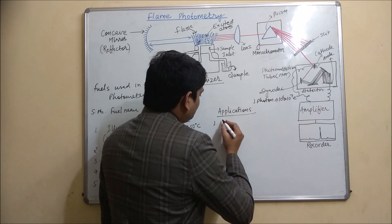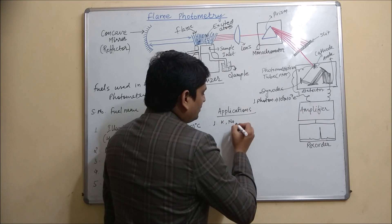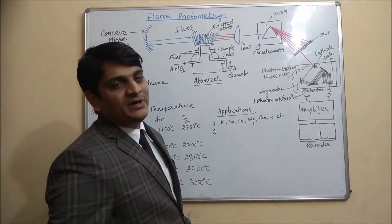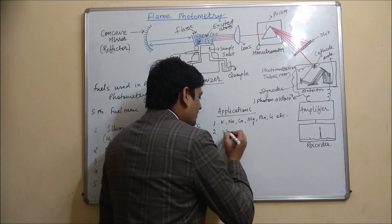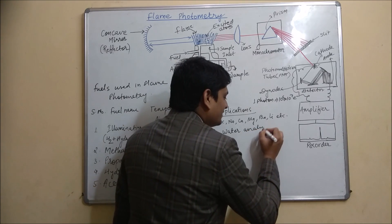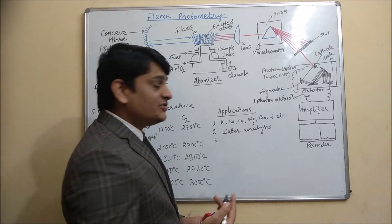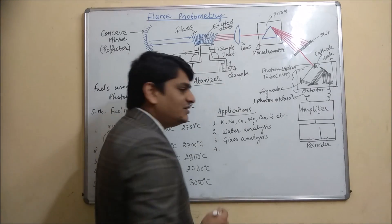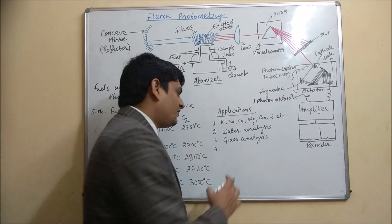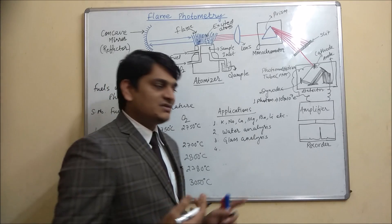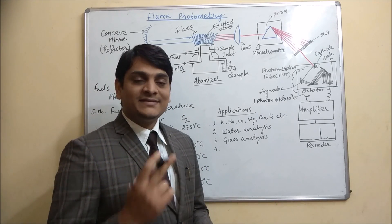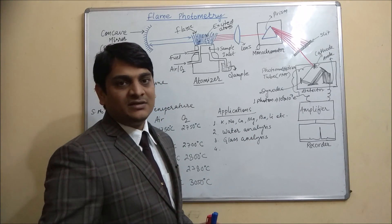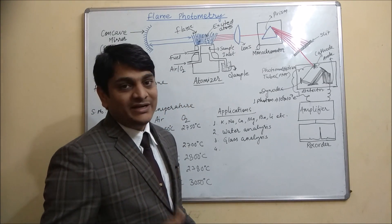Flame photometry can be used for the determination of potassium, sodium, calcium, magnesium, barium, lithium, and other elements. It can be used for water analysis. It can also be used for the analysis of glass, since glass contains sodium and potassium. For glass analysis, the glass is first converted to powder, dissolved in HCl, and the solution is placed in the sample inlet for atomization to determine potassium and sodium content.